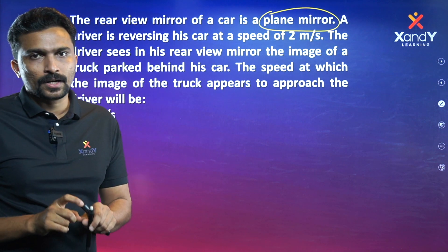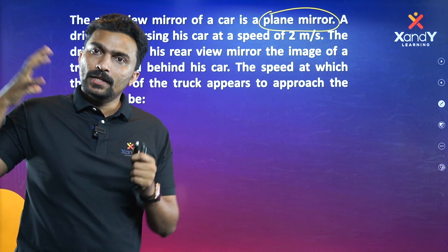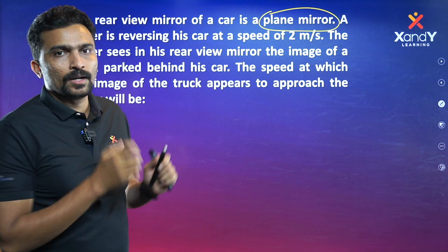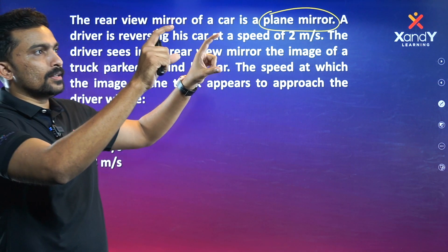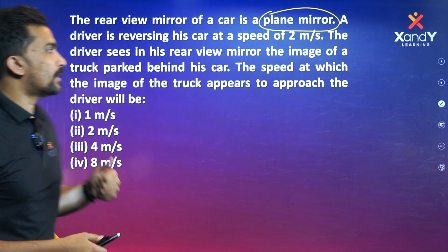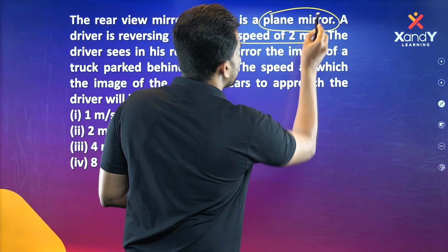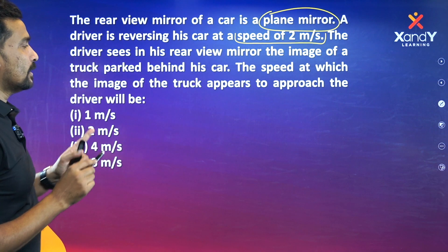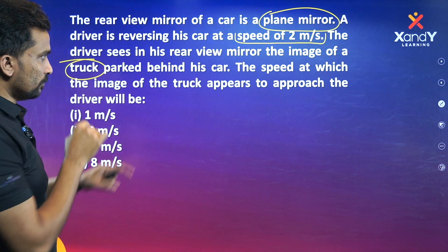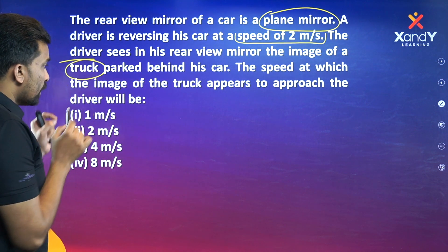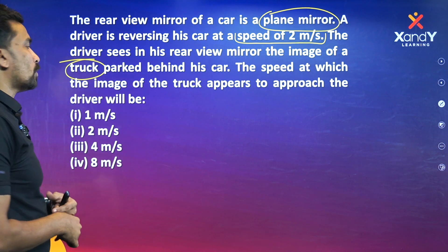In reality, you can't use a plane mirror as a rear-view mirror because the rear-view mirror is a convex mirror. That's why we have a convex mirror behind — a plane mirror is the same size. But in this problem, the mirror is a plane mirror, and at a speed of 2 meters per second, the driver sees the image of a truck.